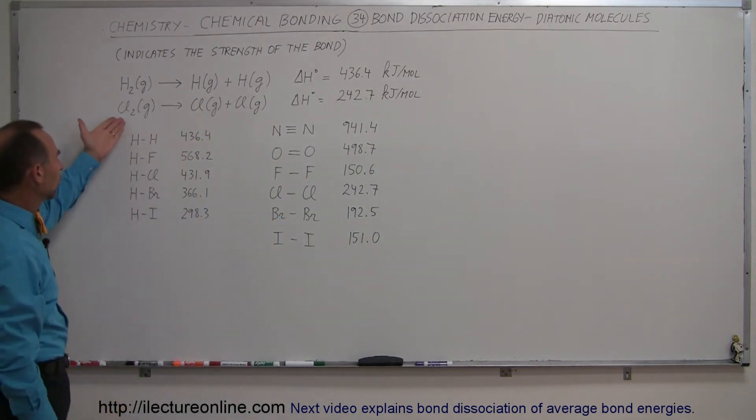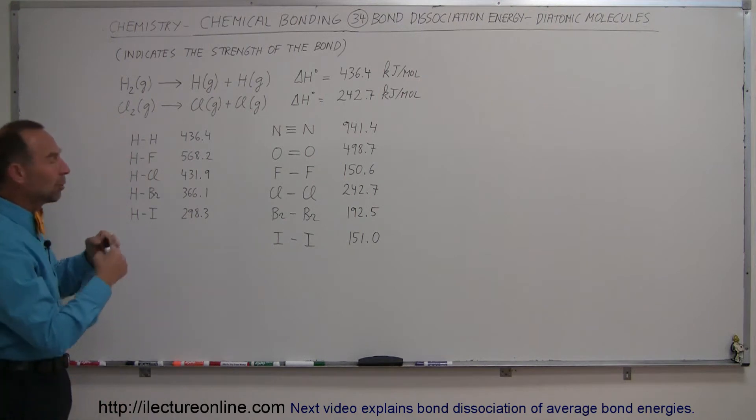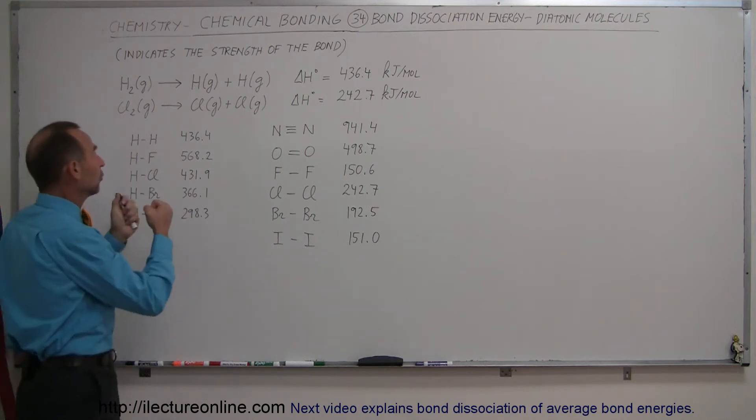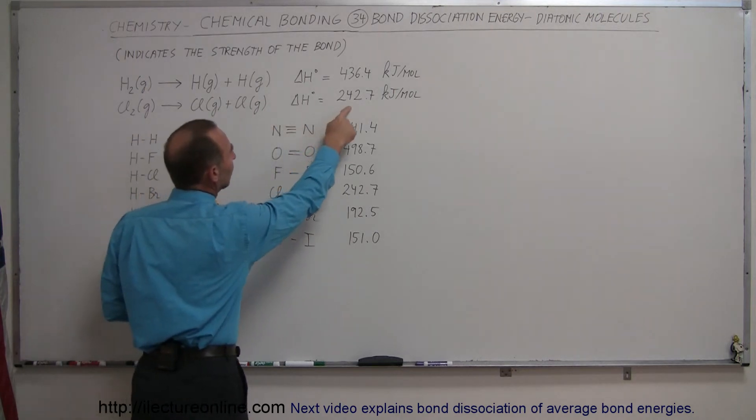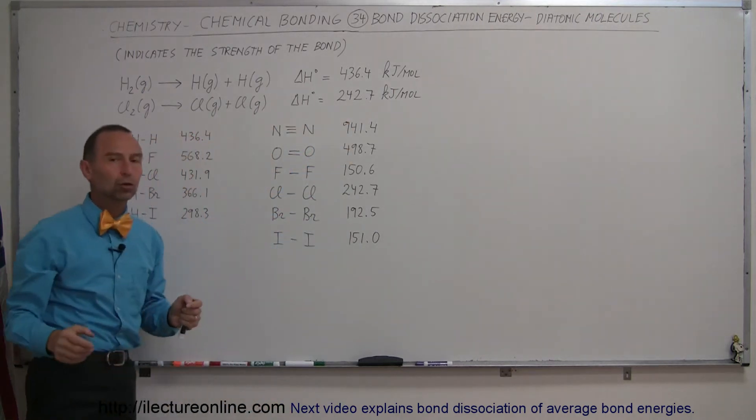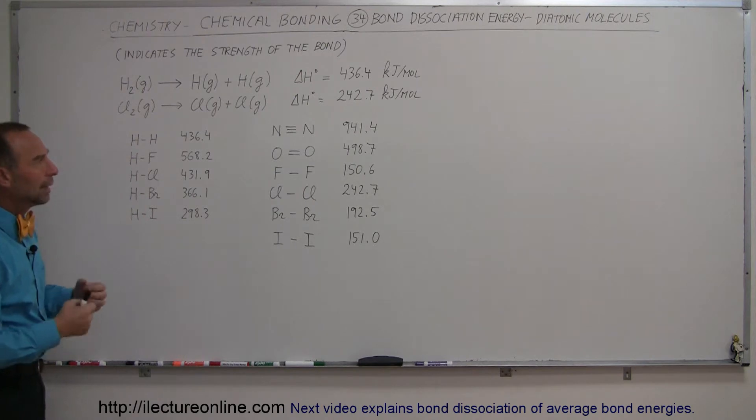In comparison, chlorine gas, Cl2, when you want to pull those two chlorines apart into two separate atoms, you'll notice that only takes 242.7 kilojoules per mole. So it would be easier to pull two chlorines apart than it would be to pull two hydrogens apart.